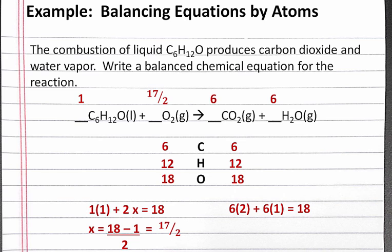However, we can't have fractions on our coefficients. We need whole numbers. So to eliminate the fraction, we'll multiply all of these coefficients times 2. And we'll get the coefficients 2, 17, 12, and 12.